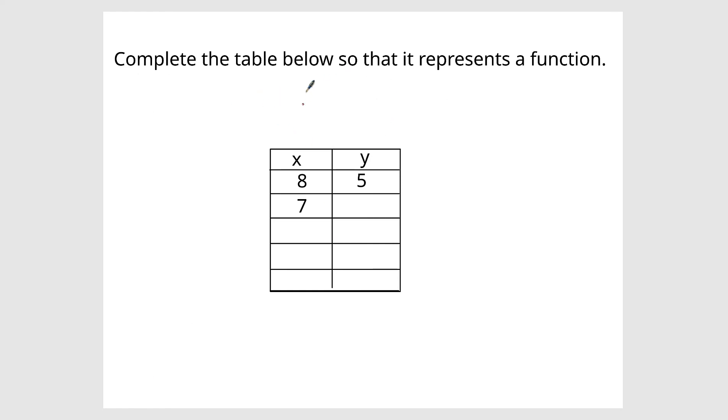Now, what if they give you a table and they say complete the table so that it represents a function? So let's say they already have some numbers on here for you, like 8 and 5. Well, this could be 7 and 6. If they might tell you not to duplicate, but if you put a 7 here, you have to put a 6 here in order for it to be a function. If you put like a 4 here, now it's no longer a function.